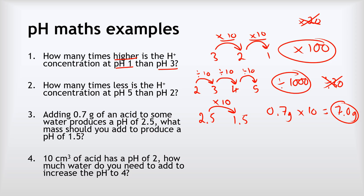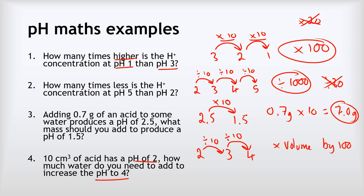We can work in reverse too. We have 10 cm³ of an acid at pH 2. How much water do we need to add to reach pH 4? Going from pH 2 to pH 4 is two steps up, so we divide the H⁺ concentration by 10 twice — a factor of 100. To dilute by a factor of 100, we multiply the volume by 100: the final volume becomes 1,000 cm³. Since we started with 10 cm³, we need to add 990 cm³ of water.